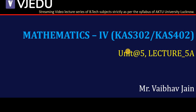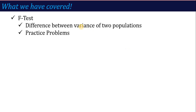In the last lecture, we talked about the F-test, which is used to find out the difference between variances of two populations. If there are two samples from two different populations, and the two samples are the same, that means the two populations are the same.